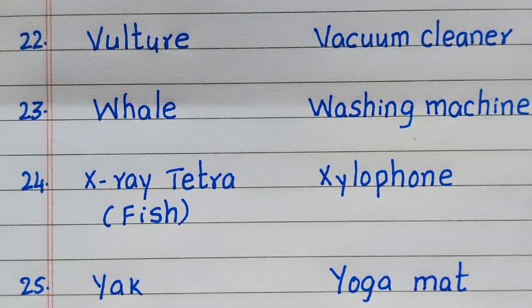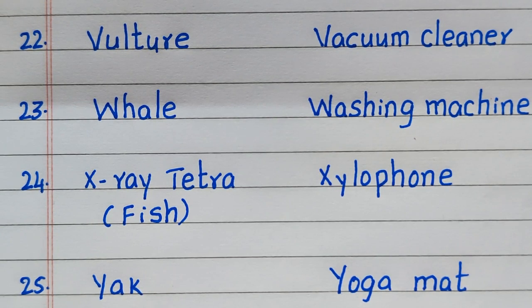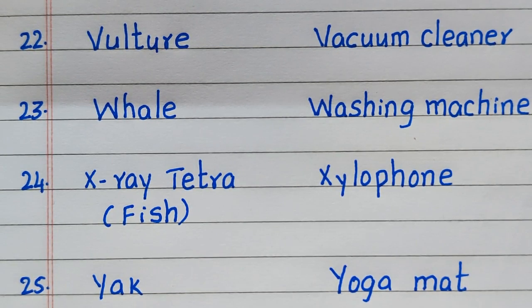With the alphabet V, the living thing is vulture, whereas non-living thing is vacuum cleaner. W: whale, washing machine. X: x-ray tetra, which is a kind of fish, xylophone. Y: yak, yoga mat.